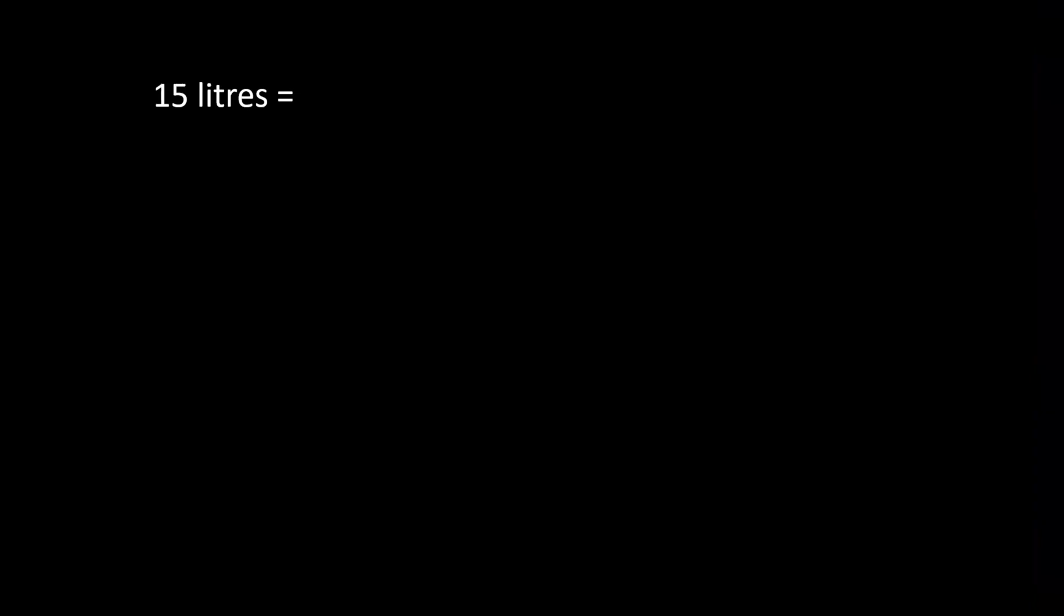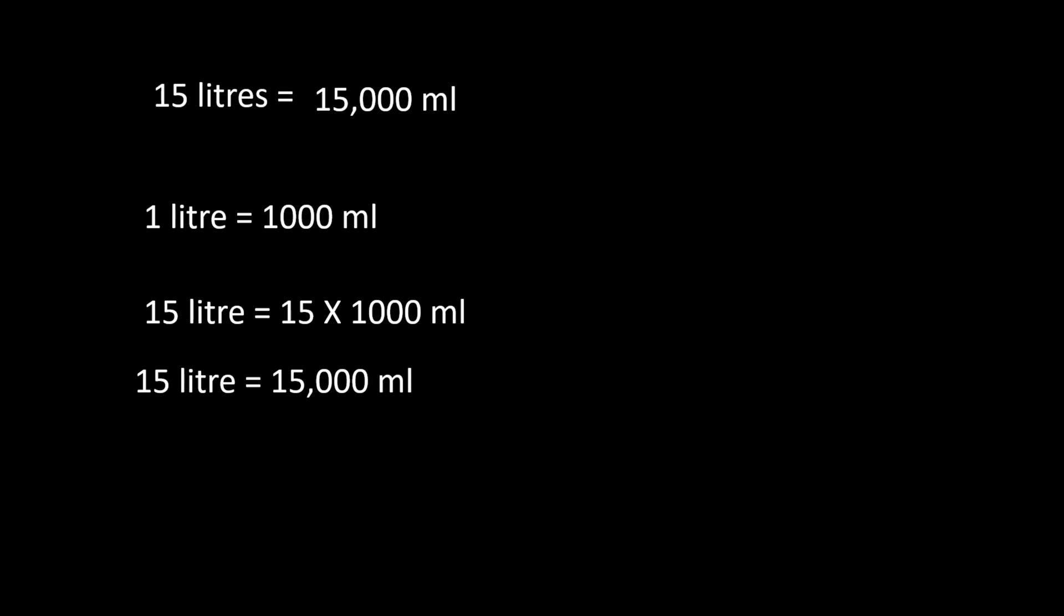Students, to make it more clear, let us solve one more sum. 15 litres, you have to convert 15 litres to milliliter. So, write the unit of capacity: 1 litre equals 1000 milliliter. So, 15 litres will be 15 multiplied by 1000 since you are converting larger to smaller. So, what is the answer? 15,000 ml. So, 15 litres is equal to 15,000 ml.